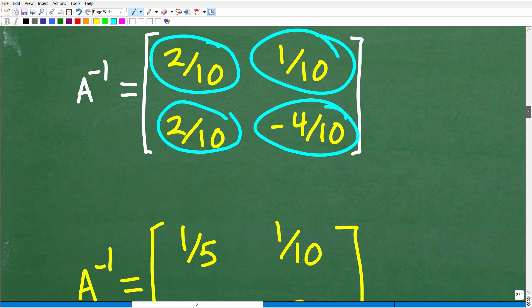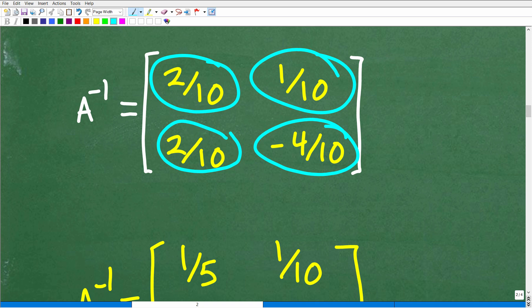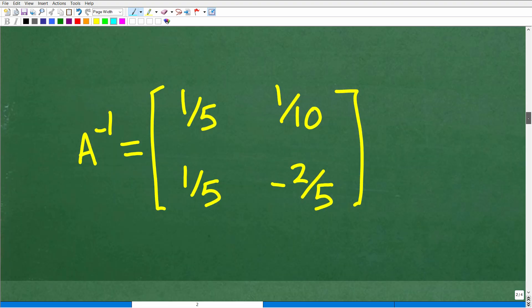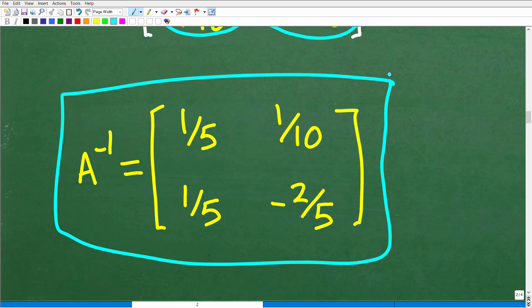And we can see we have these fractions in here that we can reduce, so we'll reduce them down. This will be 1/5. This will be 1/5. This is okay. That'll be negative 2/5, and that's what we have here as our final answer.